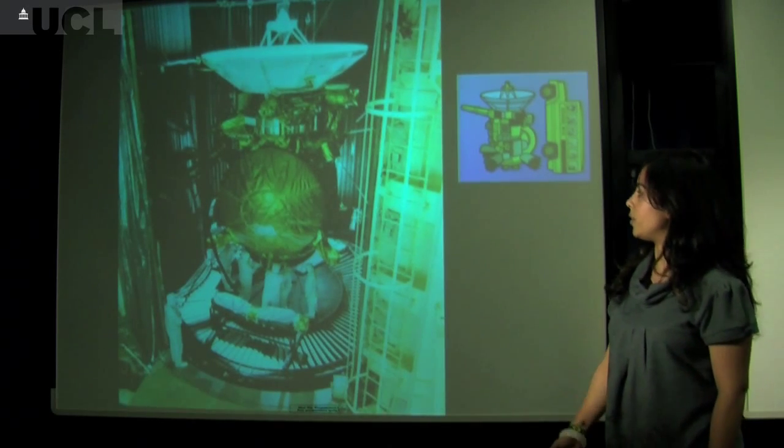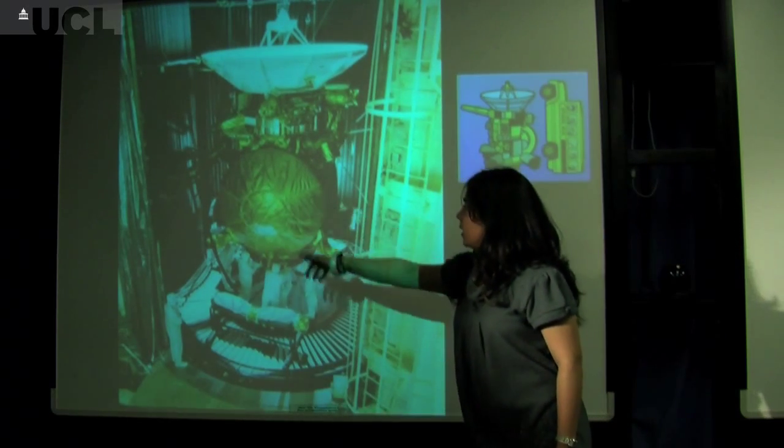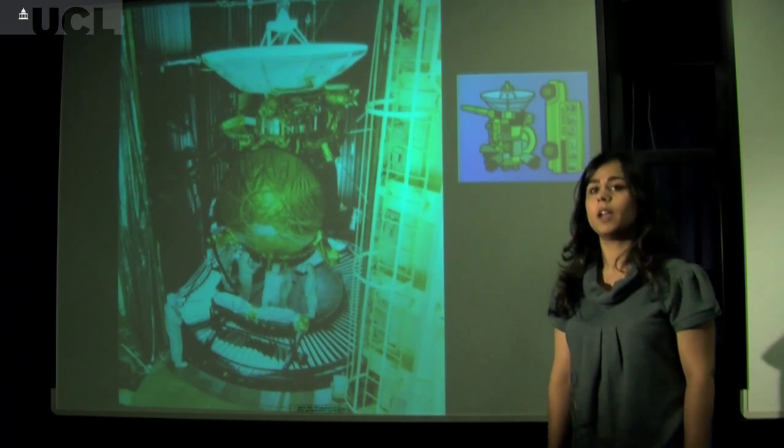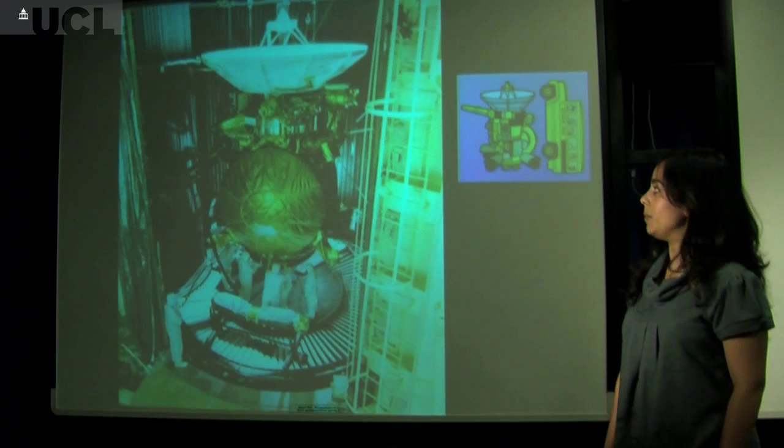This big gold thing here is the Huygens probe. The Huygens probe actually landed on Saturn's moon Titan and gave us information for about 18 months.